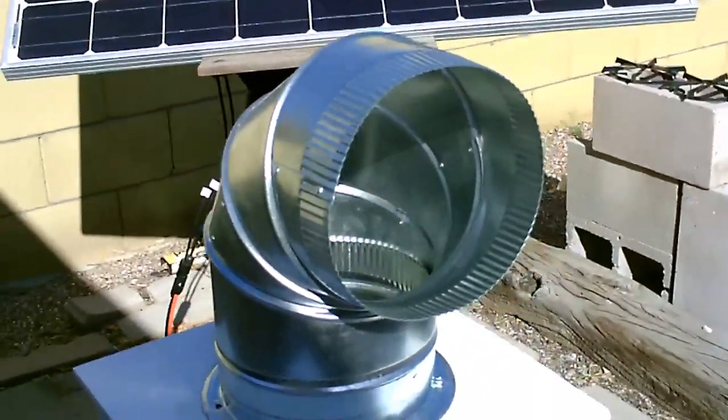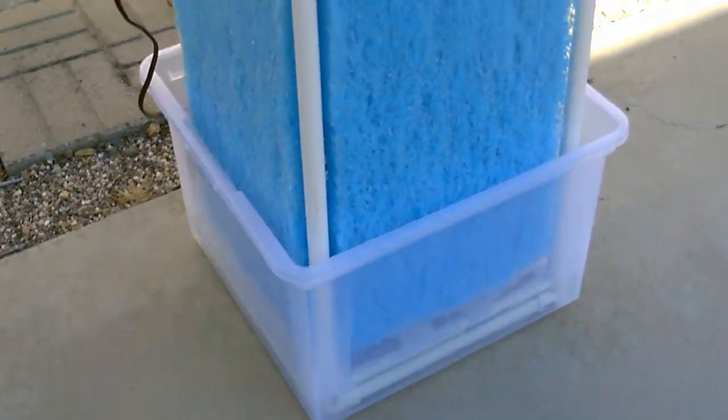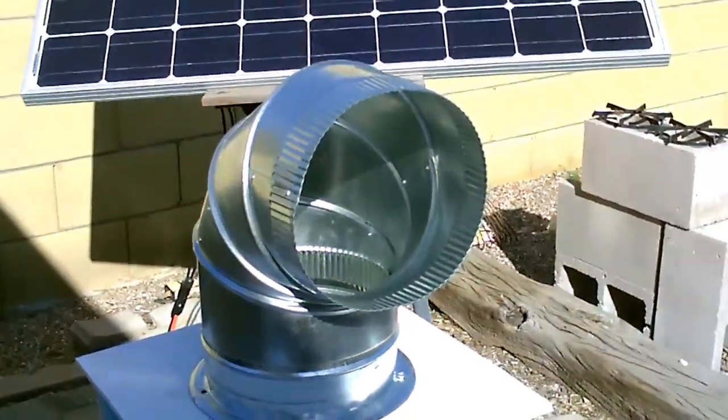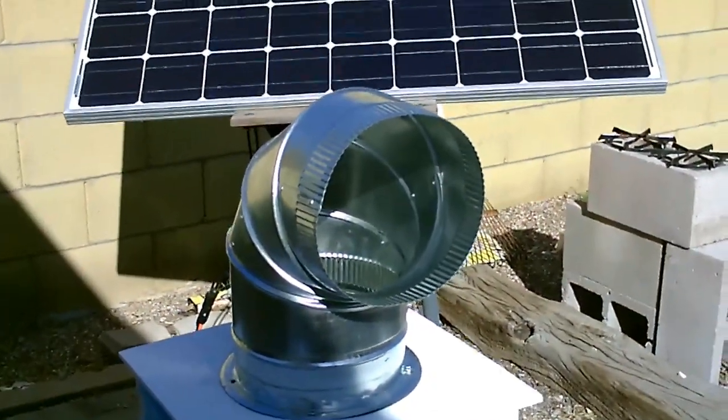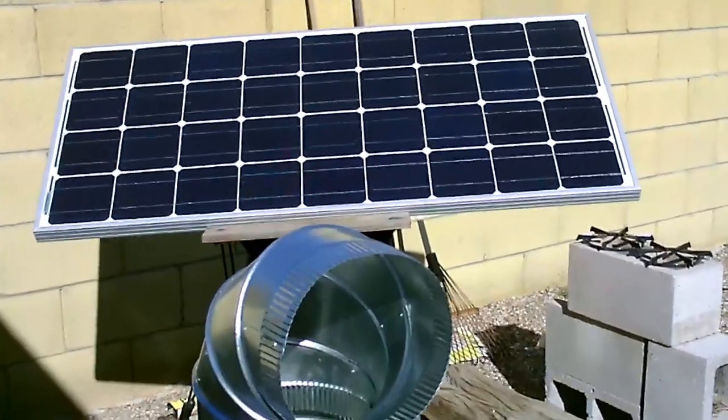As far as coverage, 2,000 CFM, four-sided cube, and 14 gallons. That'll cool 500 to 1,000 square feet, maybe a little more. Maybe up to 1,400 depending on how hot it is outside.